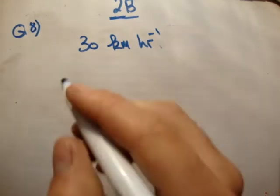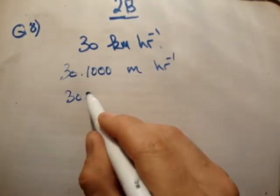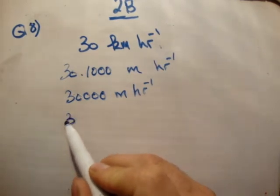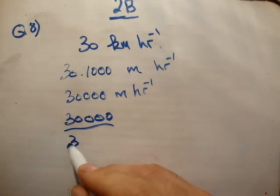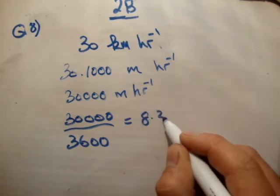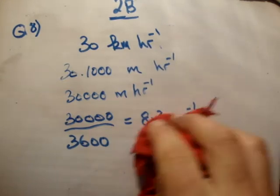So it's 30 times 1,000 meters per hour, which is 30,000 meters per hour. If it's 30,000 meters in an hour, we need to find how many meters per second, so divide by the number of seconds in the hour. 30,000 divided by 3,600 equals 8.3 meters per second. We'll check that in the back of the book and that is correct.